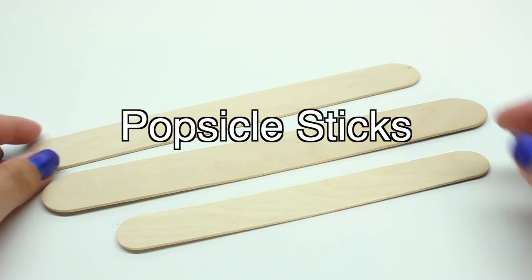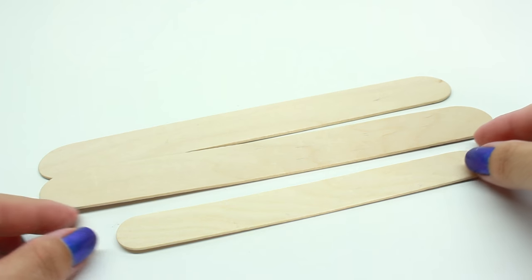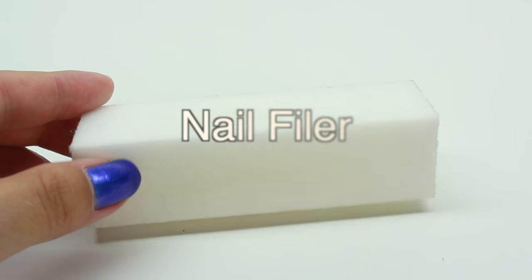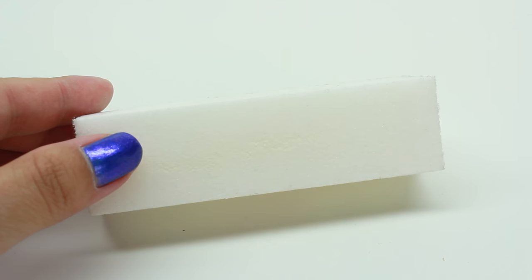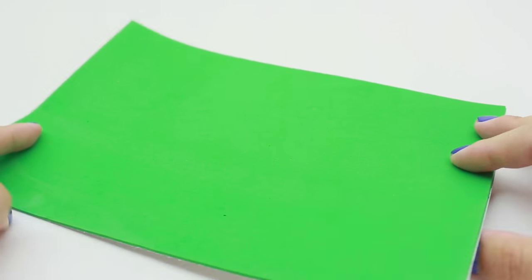You'll need some popsicle sticks in different sizes: jumbo, medium, and small sizes. You'll also need a nail filer, foam paper (this one's the sticky kind, but regular foam paper works too), glue, beads, and a pair of scissors.